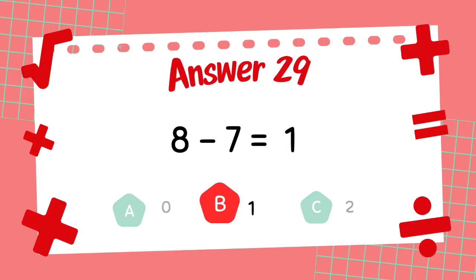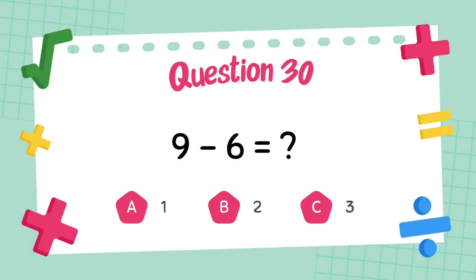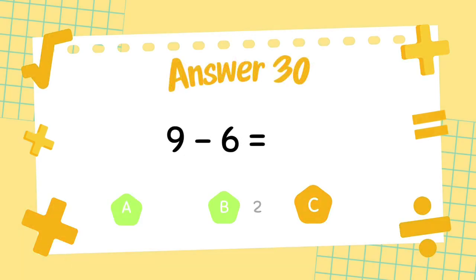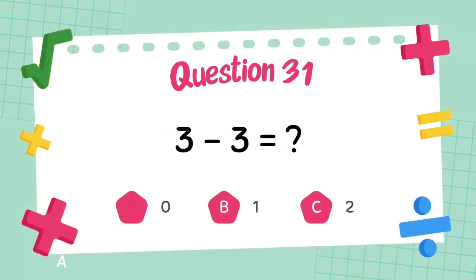What is 8 minus 7? The answer is 1. What is 9 minus 6? The answer is 3. What is 6 minus 6? The answer is 0.